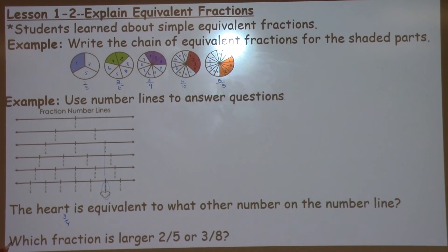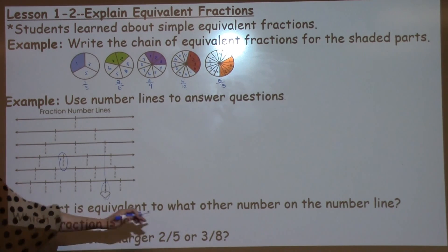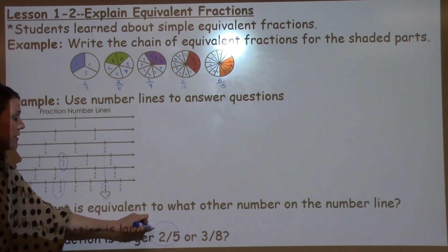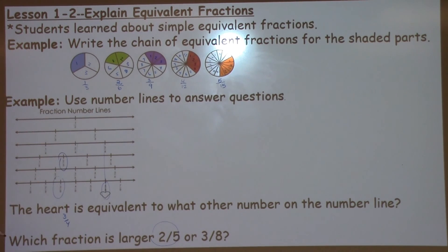Which fraction is larger, the 2 fifths or the 3 eighths? If I look at 2 fifths on my number line, I can see it's a little bit less than half. If I look at 3 eighths on my number line, I can see it is a little bit even smaller than the 2 fifths. So I know that 2 fifths is larger because it's closer to the 1 half mark.